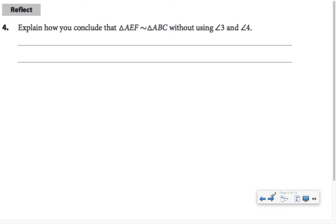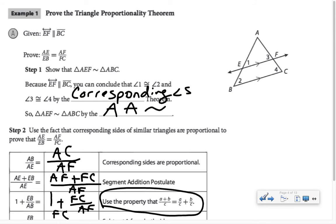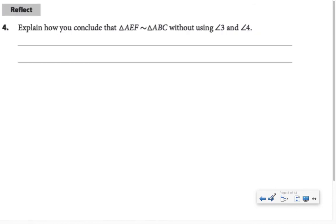How could we conclude that triangle AEF is similar to ABC without using angles 3 and 4? Notice that angle A is an angle of both triangles. So instead of using angle 3 congruent to angle 4, we could say angle A is congruent to angle A by reflexive property.